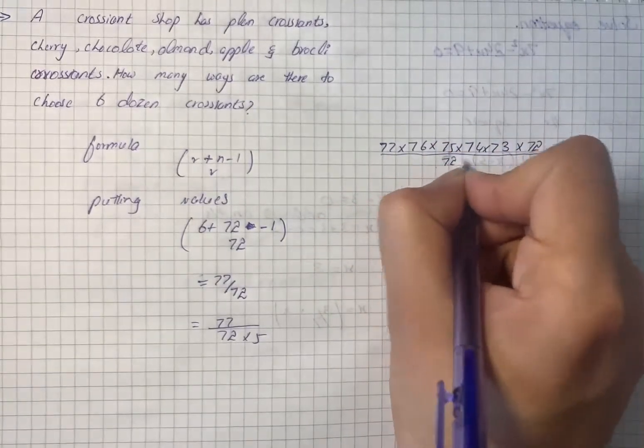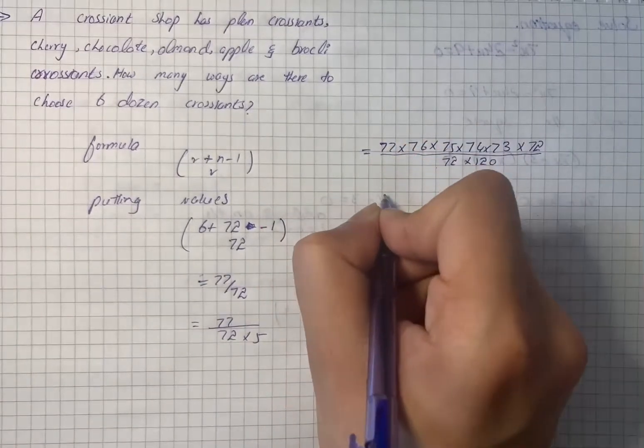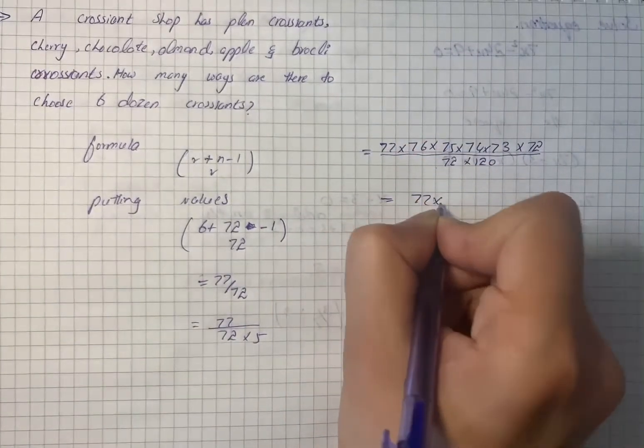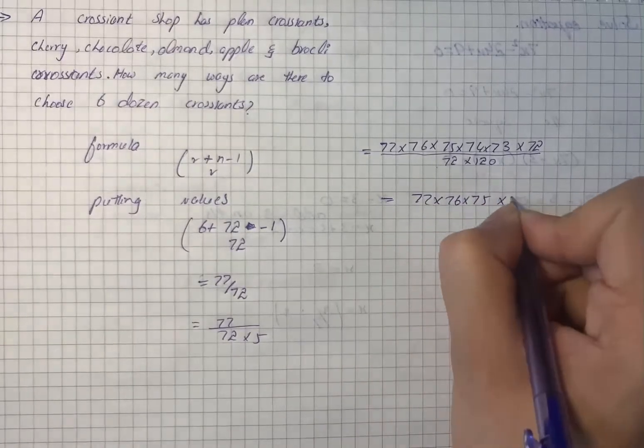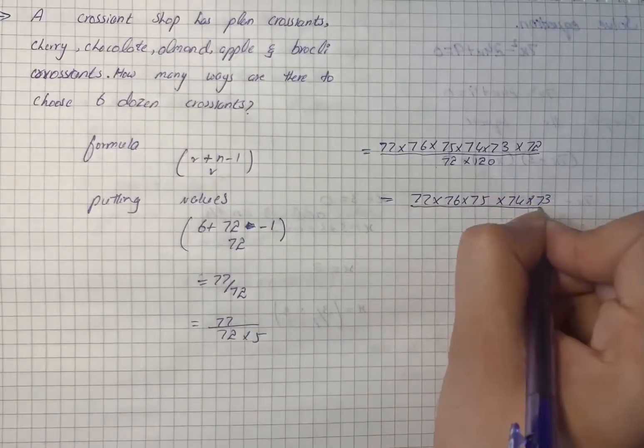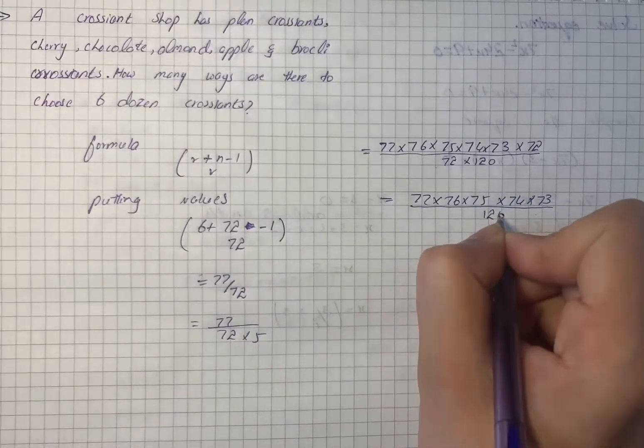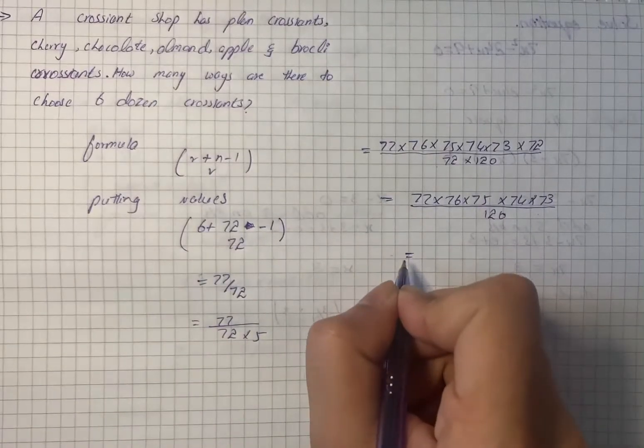It's all divided by 72 into 120. On further simplification, we have 77 multiplied by 76 multiplied by 75 multiplied by 74 multiplied by 73 divided by 120, as 72 has been canceled out.